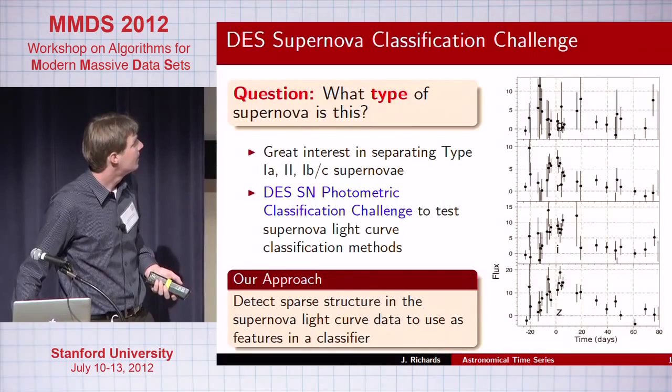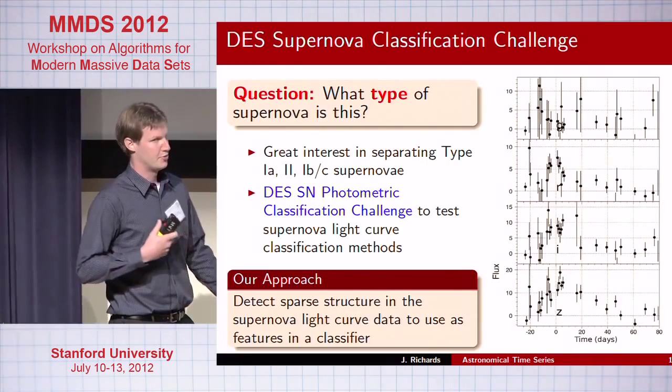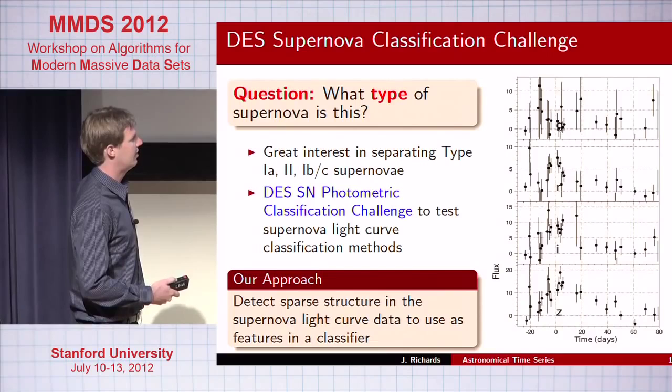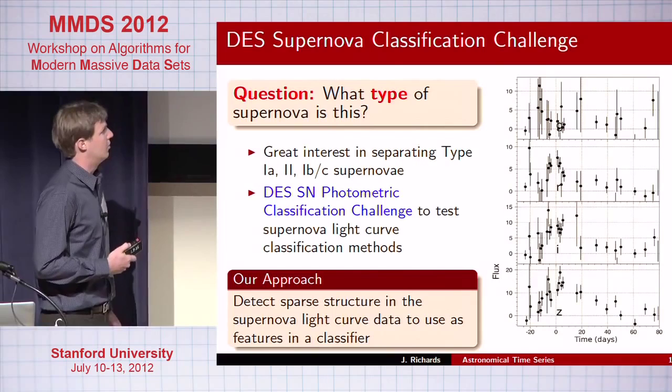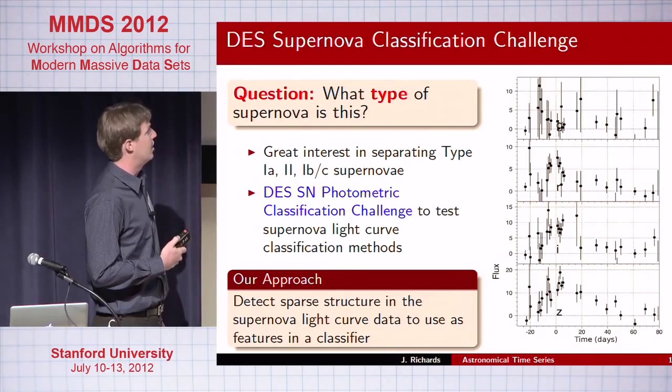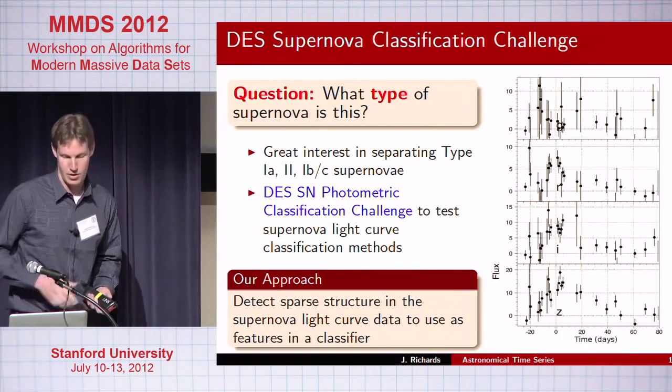One of the first projects I did with this type of data involves taking a few months of data — once the supernova has exploded and faded away — to classify them into their subtypes. There are about ten different subtypes of supernovae; people are typically interested in 1a's but others are interested in different subtypes. Our approach was to detect sparse structure in the entire database of supernova time series and build a classifier.